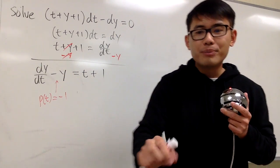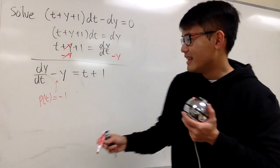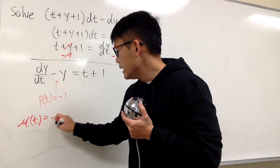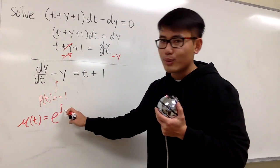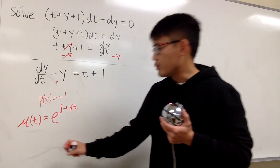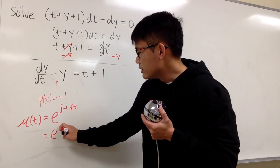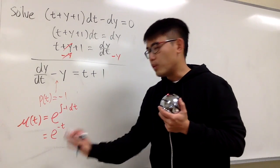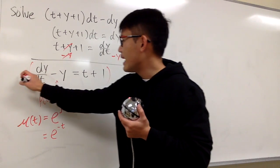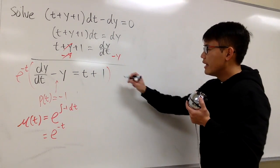Don't forget the formula for the integrating factor. So, μ(t) in this case is going to be e raised to the power of the integral of p(t), which is just negative 1, dt. The integral of negative 1 in the t world is just negative t — don't worry about the plus c. So μ(t) = e^(−t). We now multiply everything by the integrating factor, which is e^(−t).